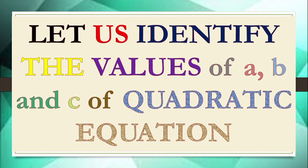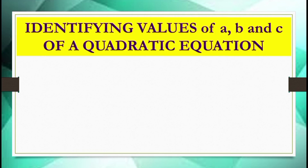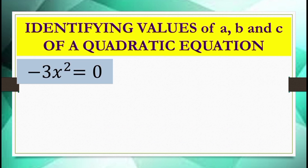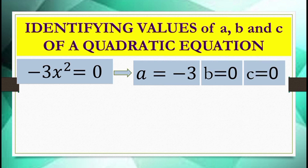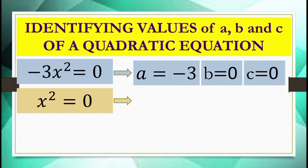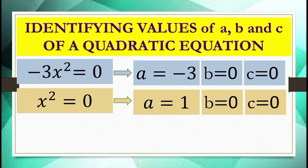Let us identify the values of a, b, and c of a quadratic equation in the form ax² equals 0. For negative 3x² equals 0, the value of a is negative 3, while b and c are both 0. For x² equals 0, a is equal to 1 — it is understood that if there is no coefficient written before the variable, the value equals 1. Again, b and c are both 0.